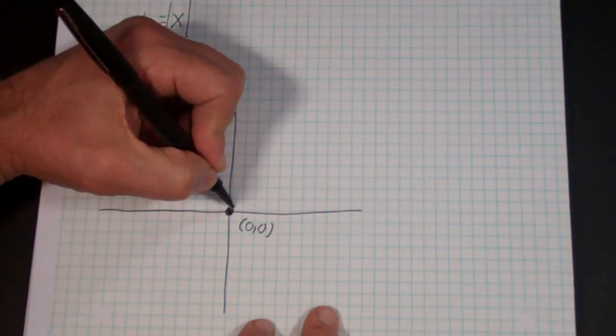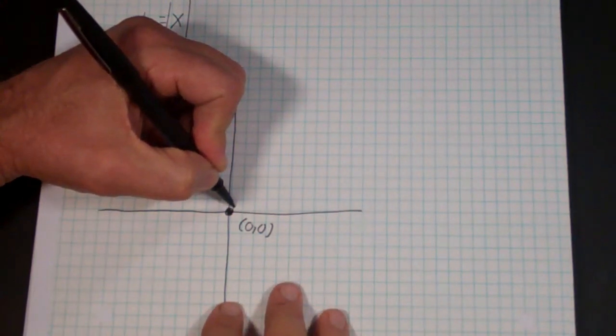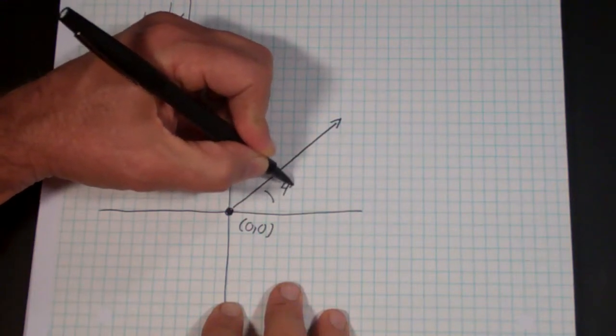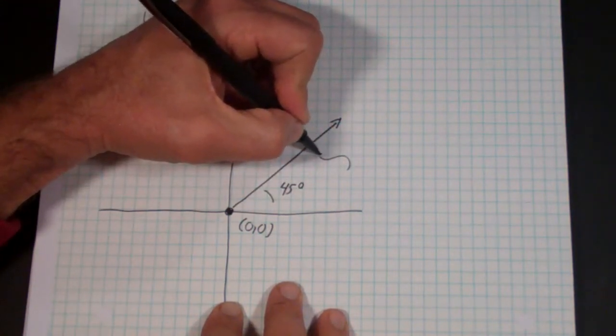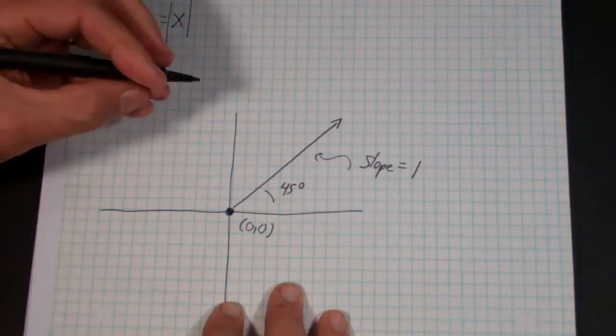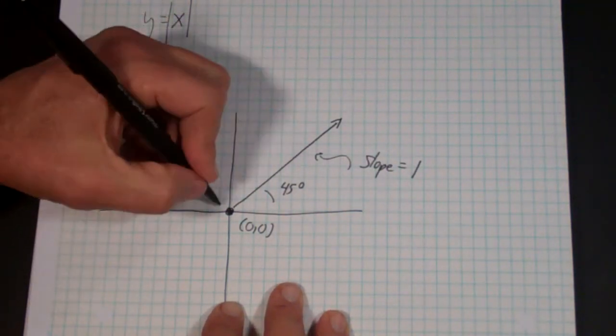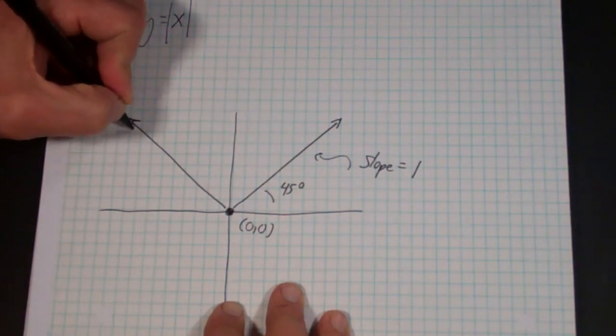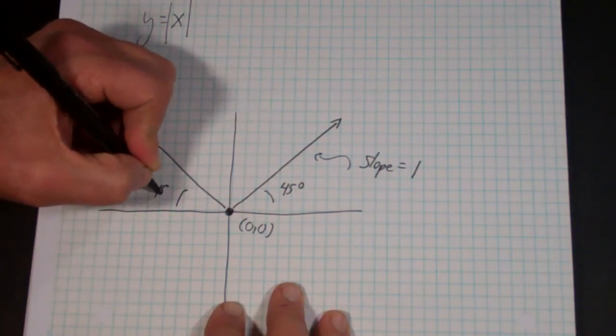And now what it's going to be is it's going to increase in a straight line and this is actually going to be a 45 degree line. Another way to think about it is you can think about that as having a slope of 1. And then in the negative direction it's going to have a slope of minus 1. And that's going to be a 45 degree angle.